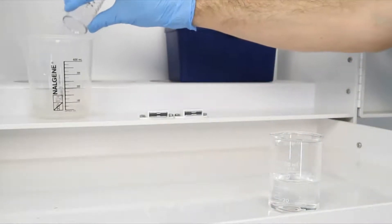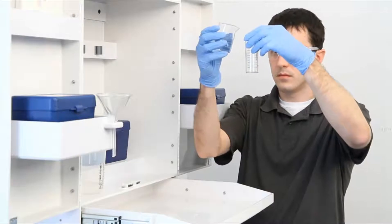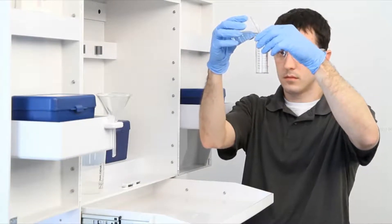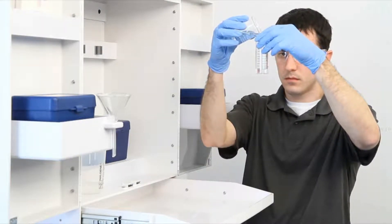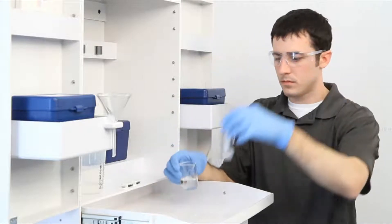To get an accurate sample size, you want to hold the vial close to eye level. Once you feel you have an accurate sample, place the vial on a level surface and bend down to eye level.